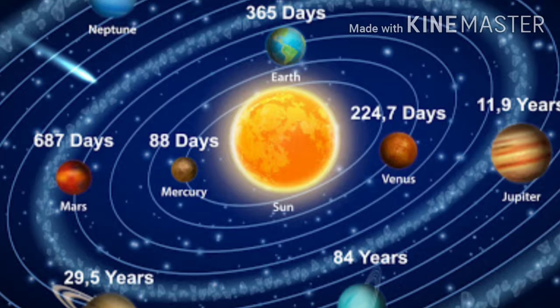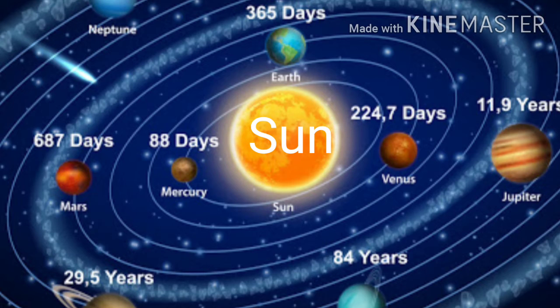Second one is: the blank is the center of the solar system. So what is at the center of the solar system? Can you tell me - see in the picture and try to answer. Yes, it will be Sun here. The Sun is the center of the solar system.